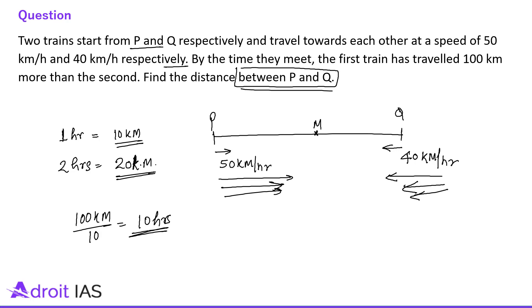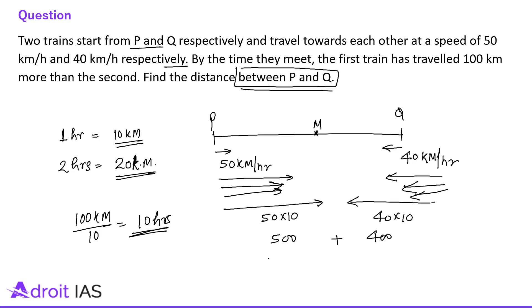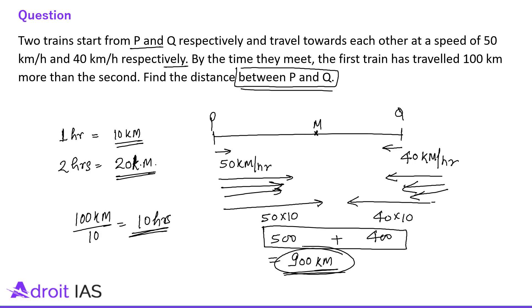When both travel for 10 hours: the first train covers 50 multiplied by 10 = 500 km, and the second covers 40 multiplied by 10 = 400 km. They are meeting at that point, so together they cover 900 km. The distance between P and Q is 900 km.